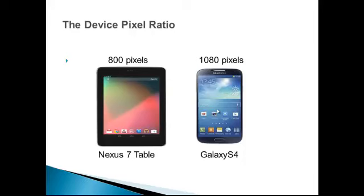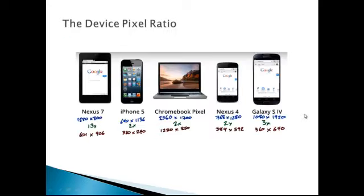The device pixel ratio is the ratio between device independent pixels and the actual physical pixels on the screen. In the next slide you can see different devices and their device pixel ratios. As you can see, Nexus 7 has a device pixel ratio of 1.3, iPhone 5 has a device pixel ratio of 2, Chromebook Pixel has a device pixel ratio of 2, Nexus 4 also has 2, and Galaxy S4 has a device pixel ratio of 3. It means different types of devices have different device pixel ratios. Thank you.